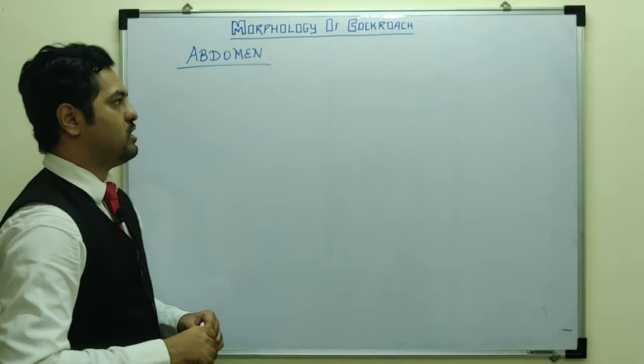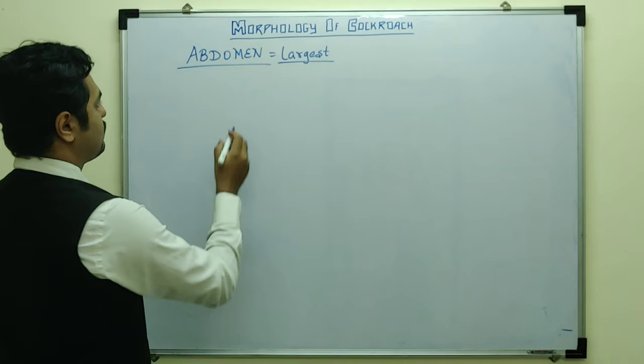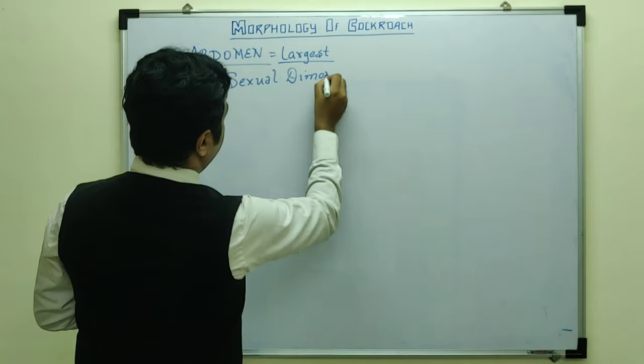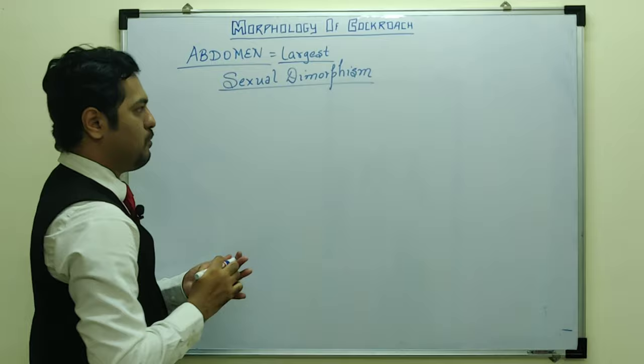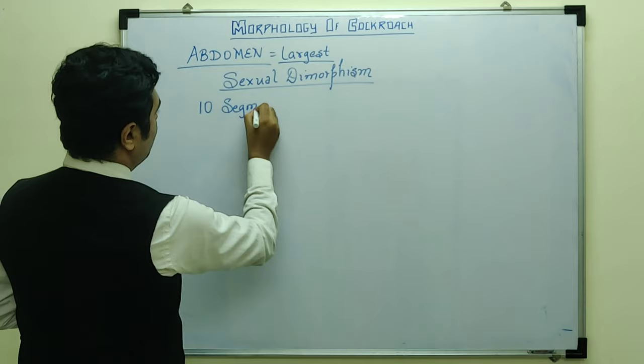Now coming to the abdomen — the largest body part of the three regions. In the abdomen, features that differentiate male and female cockroach are known as sexual dimorphism. The sexual dimorphism features are mainly present in the abdominal region. There are ten visible segments, because the 11th has been fused with the 10th.